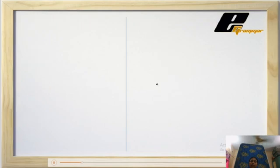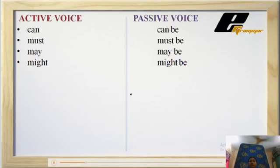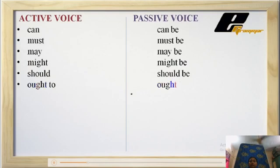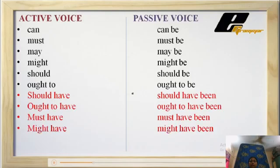Now in modal words: can becomes can be, must becomes must be, may becomes may be, might becomes might be, should becomes should be, ought to becomes ought to be, should have becomes should have been, ought to have becomes ought to have been, must have becomes must have been, might have becomes might have been, may have becomes may have been.